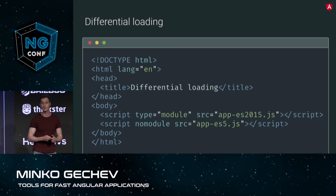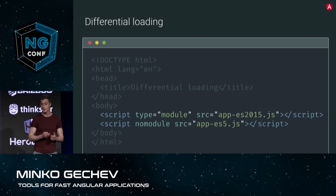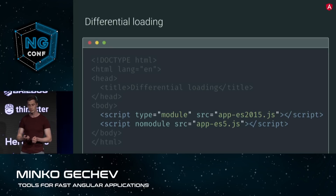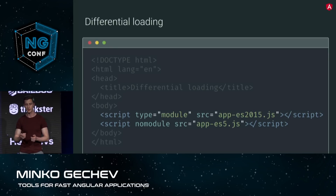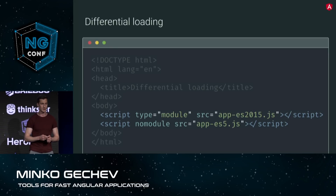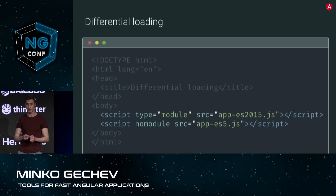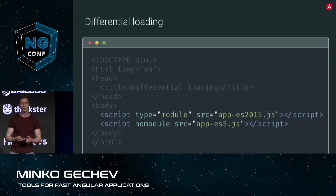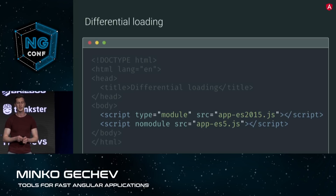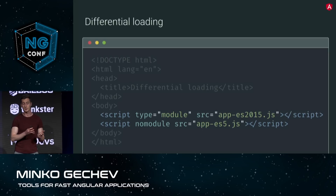Here is how the index HTML file looks like. There are two script tags. One of them is with type module, which is associated with the ES2015 bundle. And we have a script tag with attribute nomodule — this is just a hint for newer browsers to not download this bundle if they already have ESM ECMAScript 2015 module support.